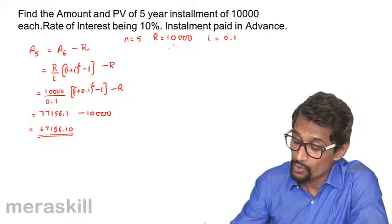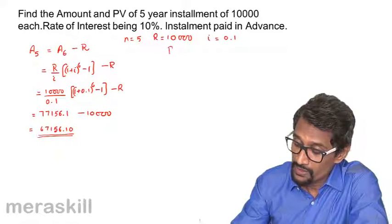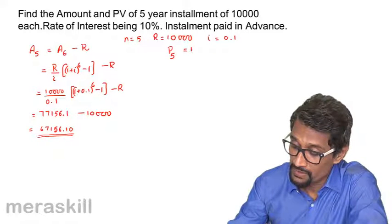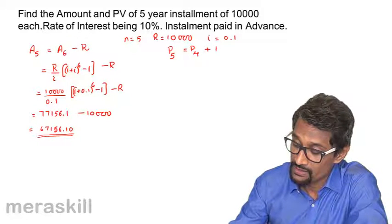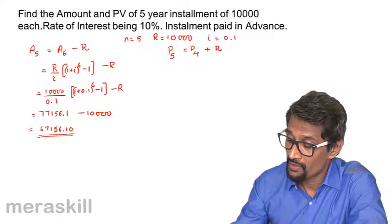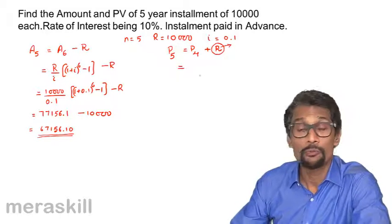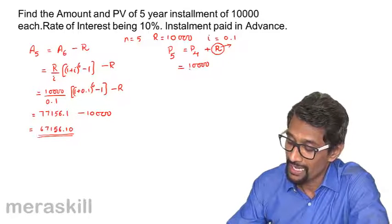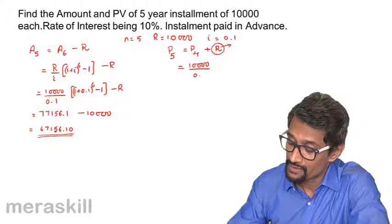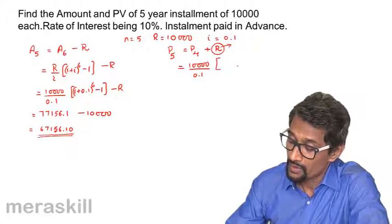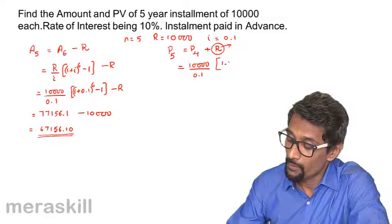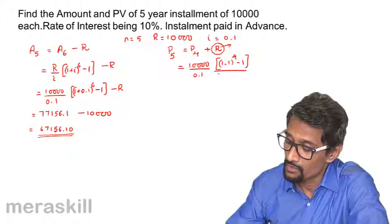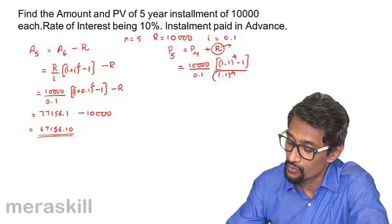Now suppose you need to find the present value. Present value for 5 years is nothing but present value for 4 years plus R. So we have P4 plus R, which is going to be 10,000 upon i — that is 0.1 — into (1.1 raised to 4 minus 1) upon (1.1 raised to 4).